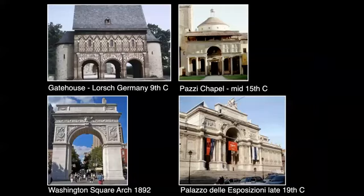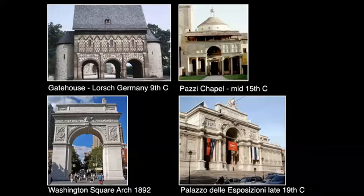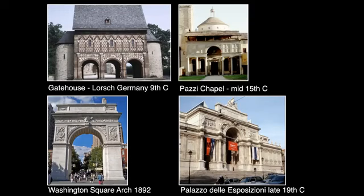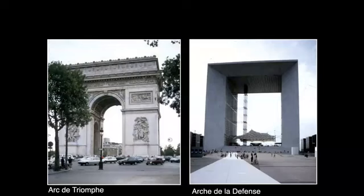The triumphal arch motif is used again and again throughout Western history — for the Holy Roman Emperor in the ninth century, on the facade of the Pazzi Chapel in 15th-century Florence, and even in America, where the motif celebrated the victories of George Washington in New York City. In the late 19th century this motif was used as the grand entrance to a new exhibit hall for Rome, which had just become the capital of the new Italian nation. The most famous is Paris's Arc de Triomphe, which dwarfs anything the Romans might have imagined. Along the exact same axis in the suburbs of Paris, Jean Nouvel's Arc de la Défense seems to mock the triumphal arch motif with postmodern irony.